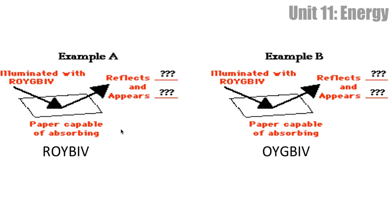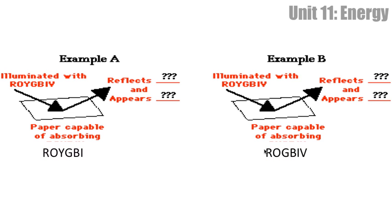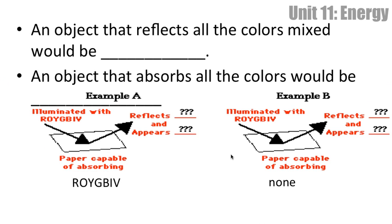Quick review: if we illuminate with white light — which is ROYGBIV, meaning it contains all colors — and this paper was capable of absorbing ROYBIV, what color would it appear? It would appear green, because it's reflecting green. Over here, illuminated with white light and absorbing OYGBIV — there's no R, so red is being reflected — this would be red paper. There's our violet paper and our yellow paper. Now the tricky ones: illuminated with white light and absorbing ROYGBIV means no light is reflected, so the paper would be black. And absorbing nothing means the paper would be white.